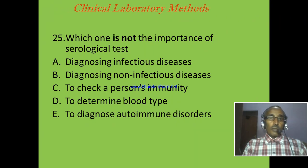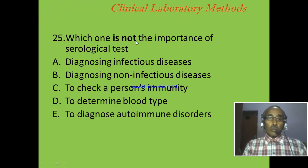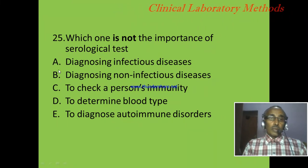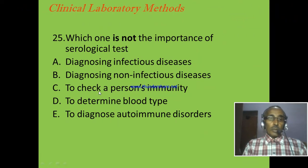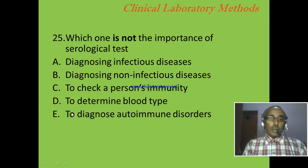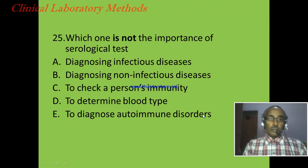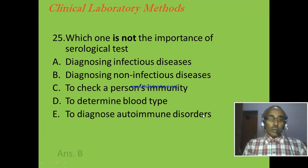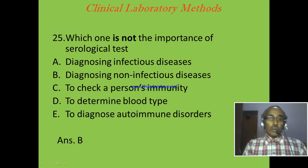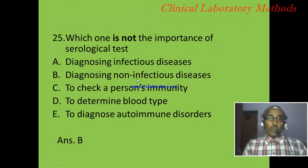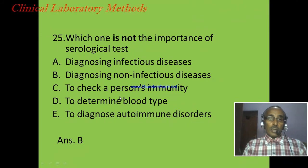Question 25: Which one is NOT an importance or function of the serological test? A: Diagnosing infectious disease. B: Diagnosing non-infectious disease. C: To check a person's immunity. D: To determine blood type. E: To diagnose autoimmune disorders. The correct answer is B — diagnosing non-infectious disease — because this is not a function of serological techniques, but all the others are.